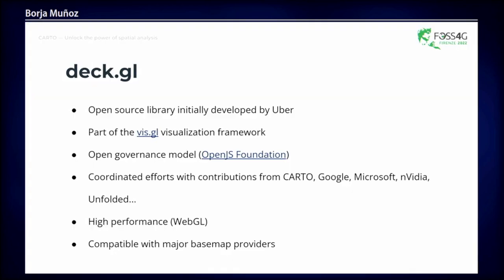Let's start with a bit of background for the project. DeckGL was a visualization library originally developed by the visualization team at Uber as part of a bigger framework called the DeckGL framework. Later the project was transferred to the Urban Computing Foundation and is now part of the OpenJS Foundation, which also manages Node.js and other JavaScript projects. There are many individuals and companies contributing to the library, including Carto.